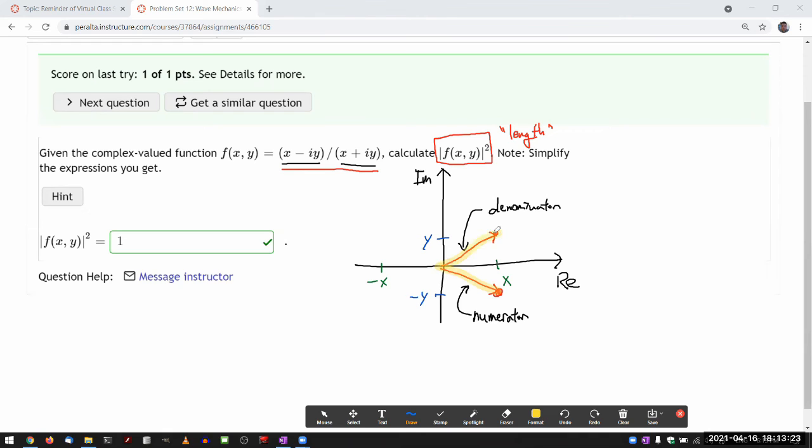So when I take the ratio of two things that have the same length, when I calculate this thing that represents some notion of length, it's no surprise that the ratio of the two things that have the same length has the length equivalent to quantity that turns out to be one.